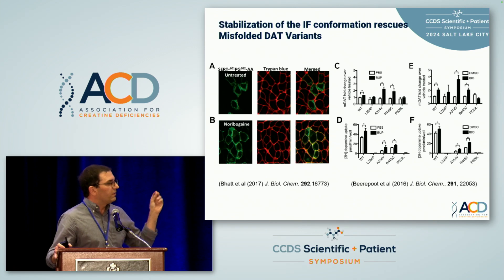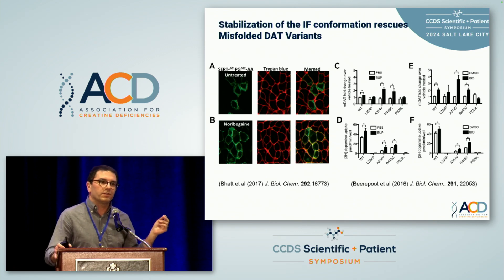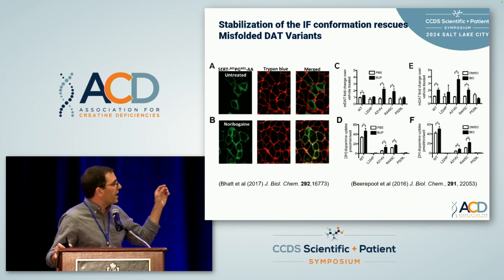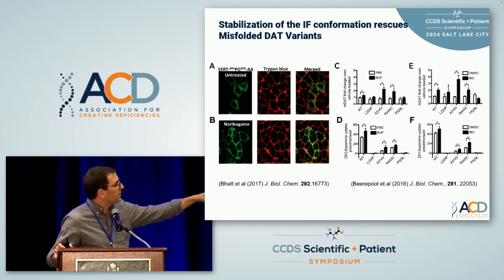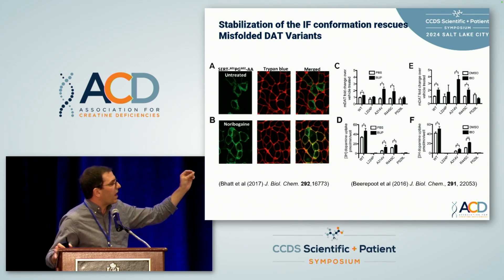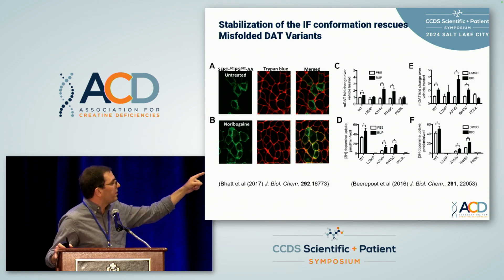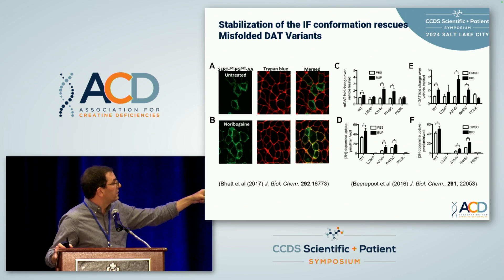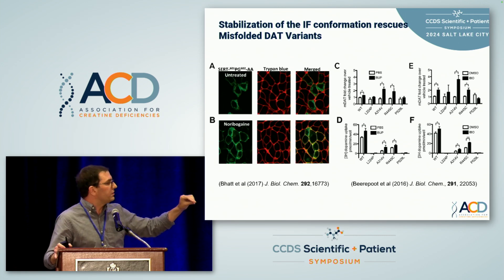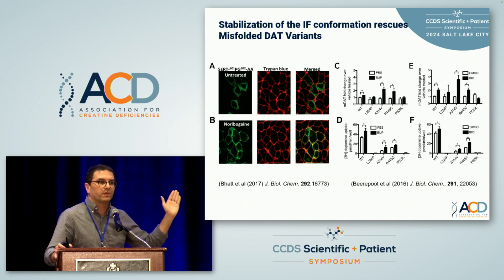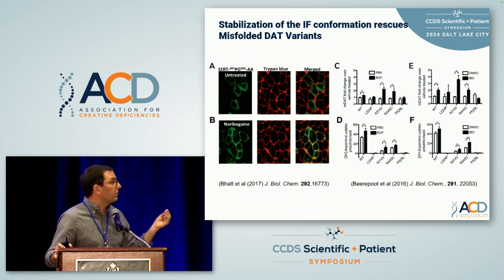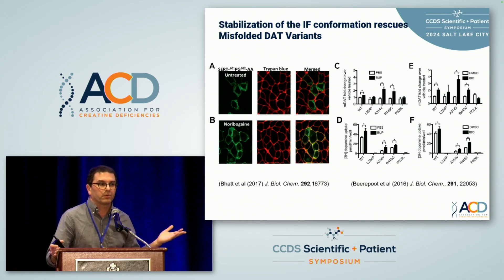When you add the drug noribogaine, you see increased trafficking to the cell membrane. It's diffuse on the left panel, but when you add the drug on the right, you get more localization of the transporter at the interfaces between cells — meaning it's going to the membrane. The right panels look at the same thing in the context of the dopamine transporter. The dopamine transporter and serotonin transporter are targets for SSRIs, antipsychotics, and other neuropsychology drugs.